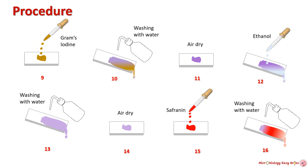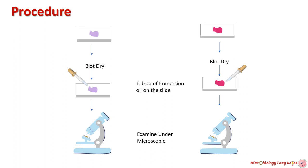Add a few drops of crystal violet. After a minute, gently wash the slide with water and air dry. Now add a few drops of Gram's iodine. After a minute, gently wash the slide with water and air dry. Now wash the slide with ethanol by tilting the slide until the ethanol runs clear, then gently wash with water and air dry. Add a few drops of safranin. After a minute, gently wash with water, air dry, and remove excess water using blotting paper. Put one drop of immersion oil on the slide and observe it under the microscope.